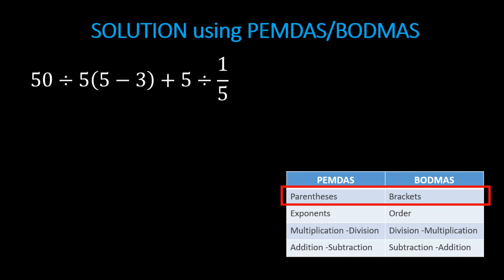So you just copy that below: 50 divided by 5, then copy 2, plus 5 divided by the fraction 1 over 5. Since we don't have expressions inside the parentheses anymore, let's go to the next order of operation: exponents or order.